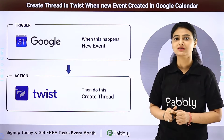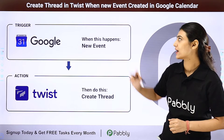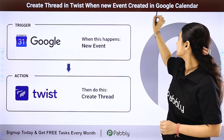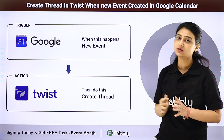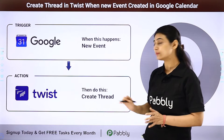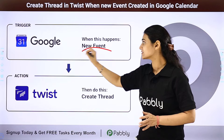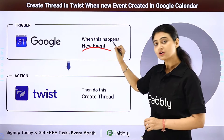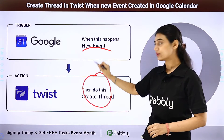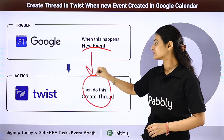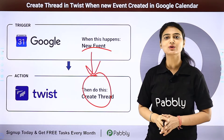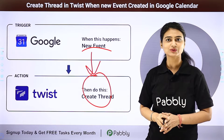In this video, we will learn how you can automatically create a thread in Twist when a new event is created in Google Calendar. So every time a new event is created in Google Calendar, a thread should be created in Twist. We are going to automate this entire process using Pabbly Connect.